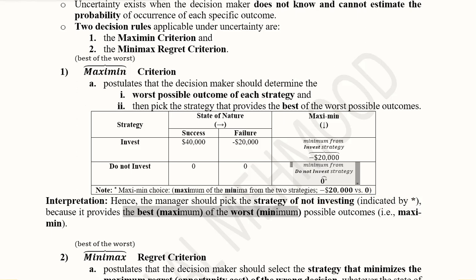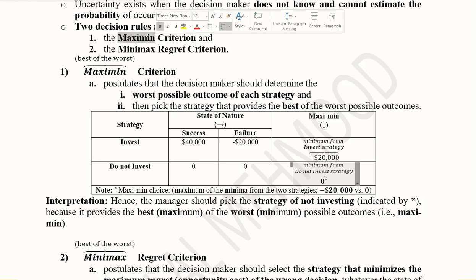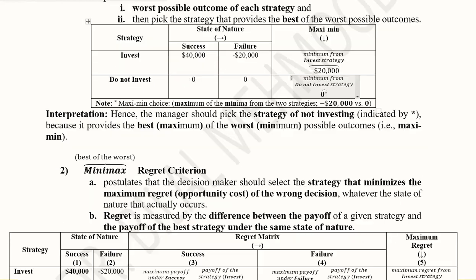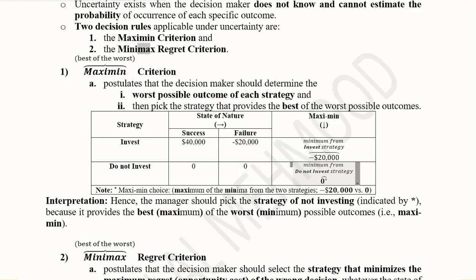This was the first criterion — without probabilities, we can still make a decision. Now we have the minimax regret criterion. You can guess it is something reverse: in maximin we dealt with profit/returns, but here we deal with regret, something undesirable or a loss. Minimax means we will find the minimum of the two maximum regrets.